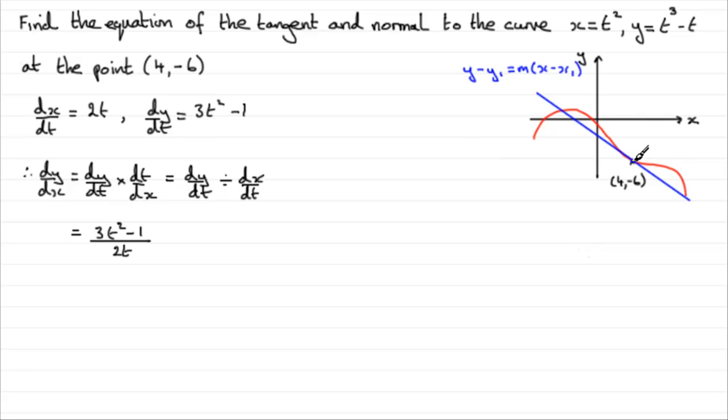And this is a point that's quite interesting here, that you've got to be very careful with. To do this, to find the t value, turn to the easier of these two equations, which I think has to be x equals t squared.